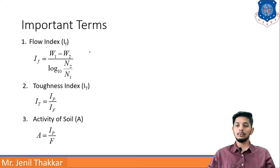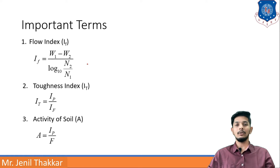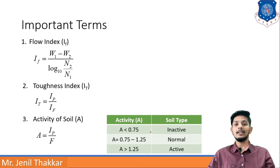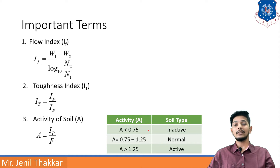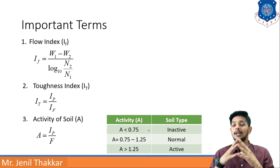In the flow index formula, w1 and w2 are water contents, and n2 and n1 are quantities coming from the flow curve, which we understood in the previous video in the liquid limit test. Regarding activity: if A is less than 0.75, the soil is inactive; if activity is between 0.75 to 1.25, soil is normal; and if activity is greater than 1.25, it is an active soil.